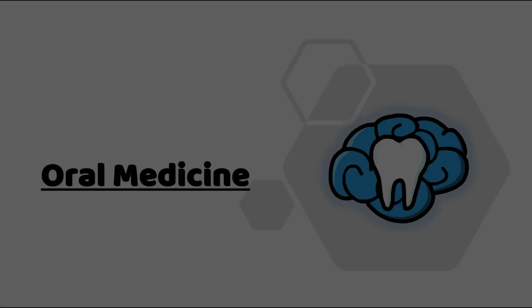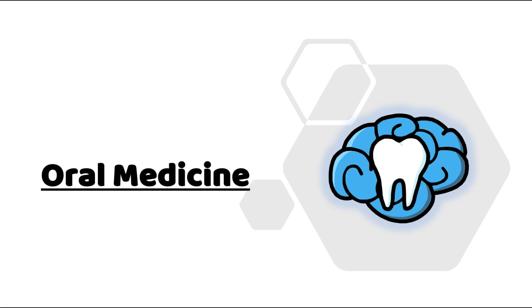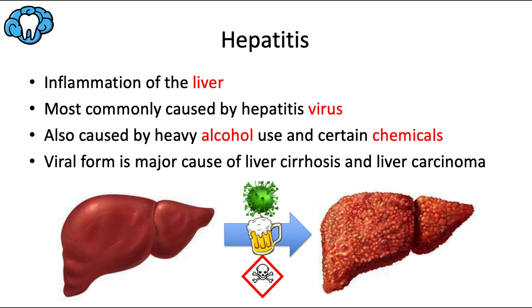Hey everyone, Ryan here and welcome back to our oral medicine series. This video will be all about hepatitis. Just like gingivitis is inflammation of the gingiva, periodontitis is inflammation of the periodontium, and pulpitis is inflammation of the dental pulp, hepatitis is inflammation of the liver, which is primarily composed of hepatocytes, hence the name hepatitis. Hepatitis is most commonly caused by infection with a hepatitis virus — viral hepatitis is the most common form of hepatitis out there.